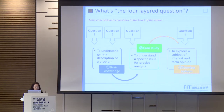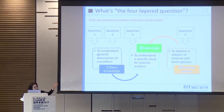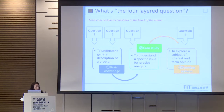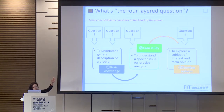This is the four-layered question structure, moving from easy peripheral questions to the heart of the matter. In one class of 90 minutes, there are three periods. First: basic knowledge, to understand the general description of a problem. Second: a case study, to understand the specific issue for precise analysis. Third: forming an opinion, to explore a subject of interest and form an opinion. I made four layered questions — question one, question two, question three, question four — and I'll explain each one.